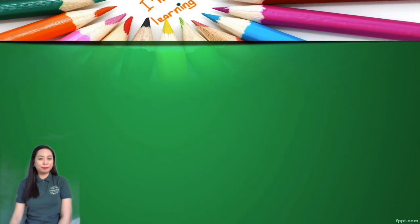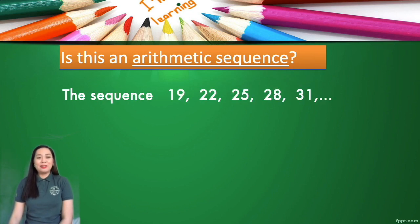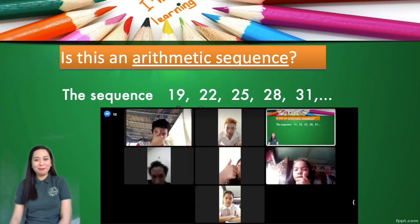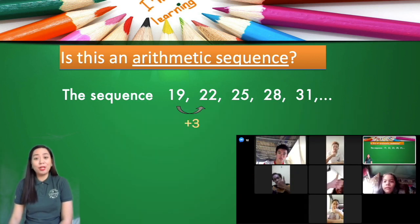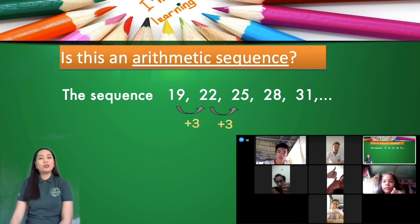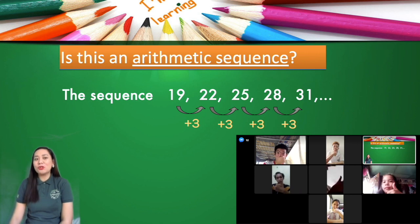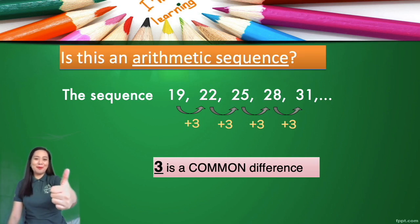I want you to give a thumbs up if it's an arithmetic sequence and thumbs down if it is not. Let's start: is 19, 22, 25, 28, 31 an arithmetic sequence? To get the common difference, we identify what number is added: we add 3, another 3, another 3, and also 3. Since 3 is common, therefore this is an arithmetic sequence.